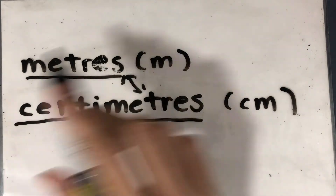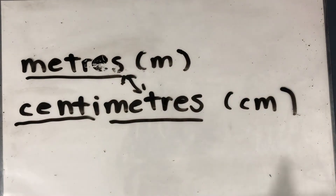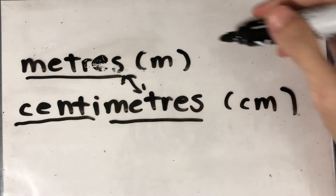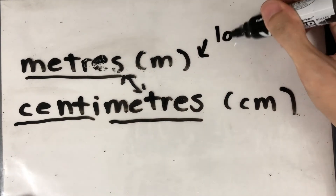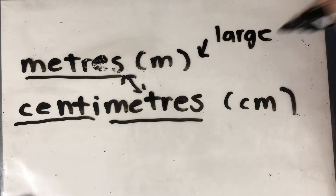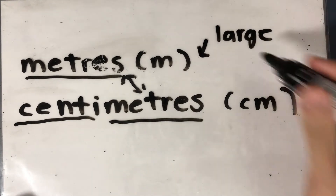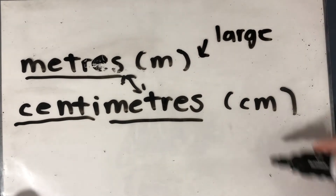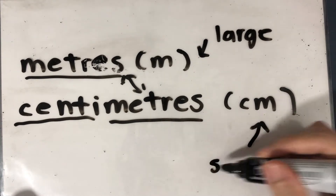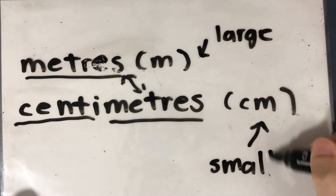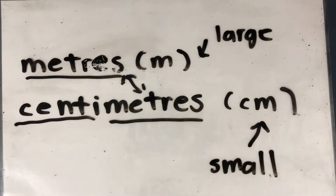Now, what's the difference between these two terms we use to measure length? Meters is used to measure something large, or long, or big. Centimeters is used to measure something small — something shorter, we measure in centimeters.